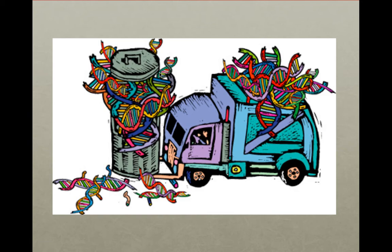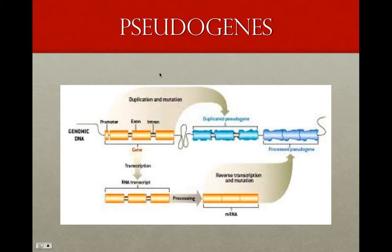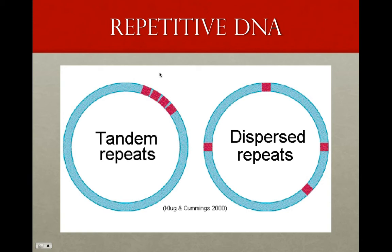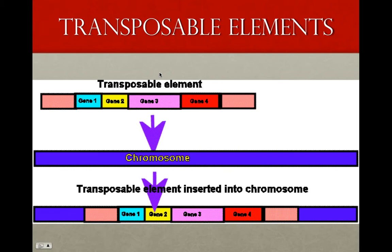Some of the non-coding DNA consists of pseudogenes — DNA sequences similar to normal genes but non-functional. They may be vestigial or had a purpose in ancestors. There is also repetitive DNA: sequences that are repeated in the genome. A lot of repetitive DNA is transposable elements and related sequences. Transposable elements are areas of DNA that move around and make up 25 to 50% of the mammal genome.